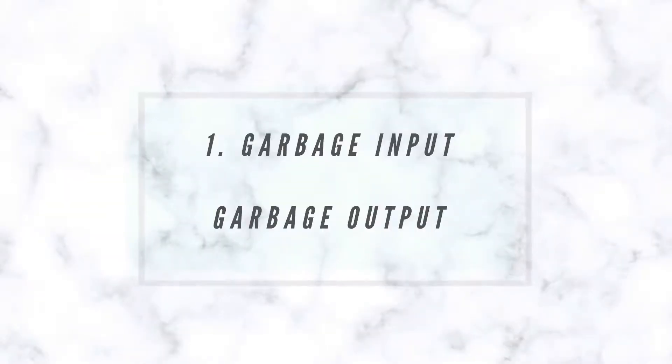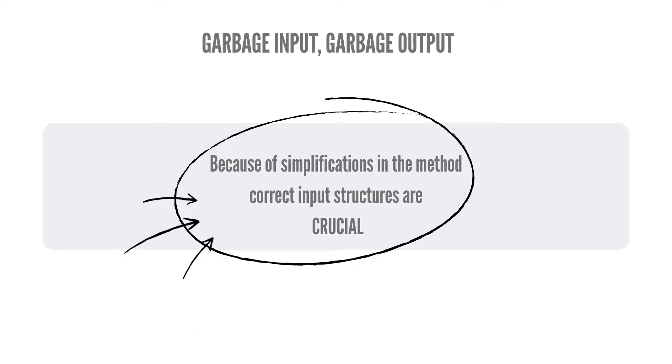One of the most important rules, and I chose it to be the first one, is garbage input, garbage output. Needless to say that good input structures are an absolute must for a precise and reliable research result. What we also must know is that fast docking methods have various simplifications implemented both in the searching algorithm and in the scoring functions as well.